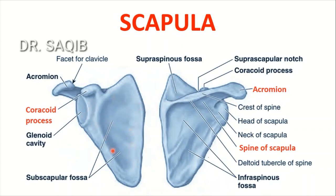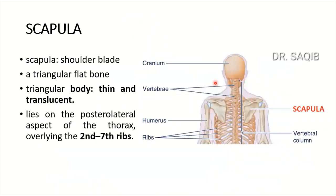This is the anterior view of the scapula and this is the posterior view. I will discuss in detail the bony features and its attachments. You can see this is the posterior aspect of the human being. The scapula is known as a shoulder blade. It's a triangular flat bone. Its body is thin and translucent. It lies on the posterolateral aspect of the thorax, overlying the second to seventh ribs.